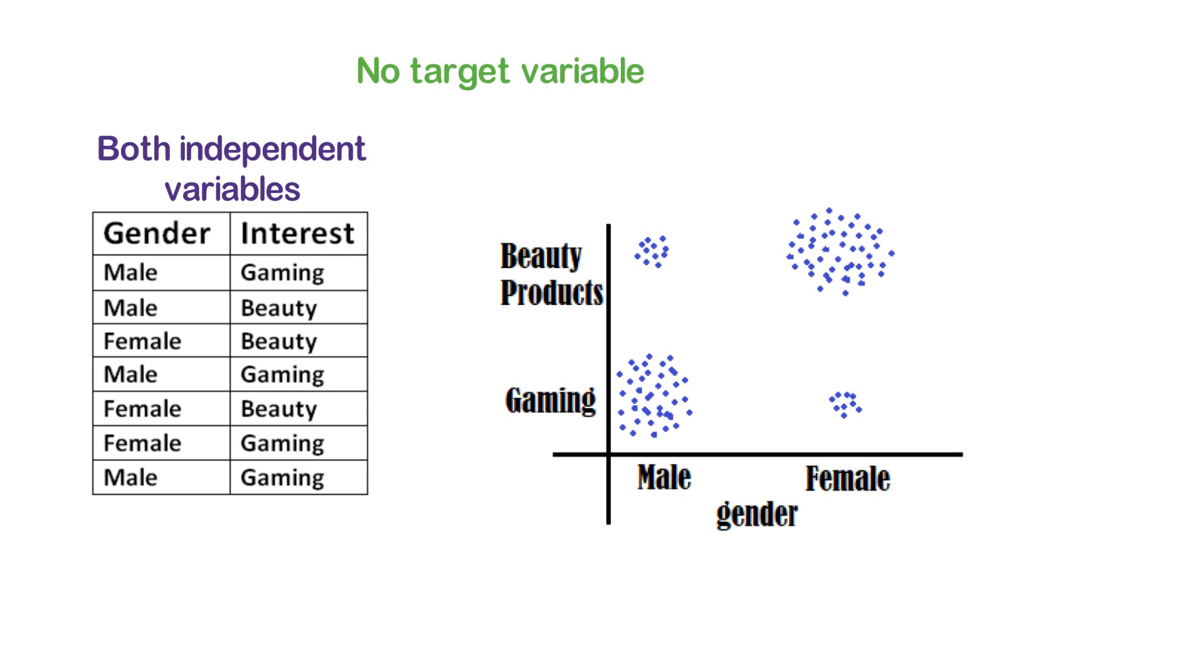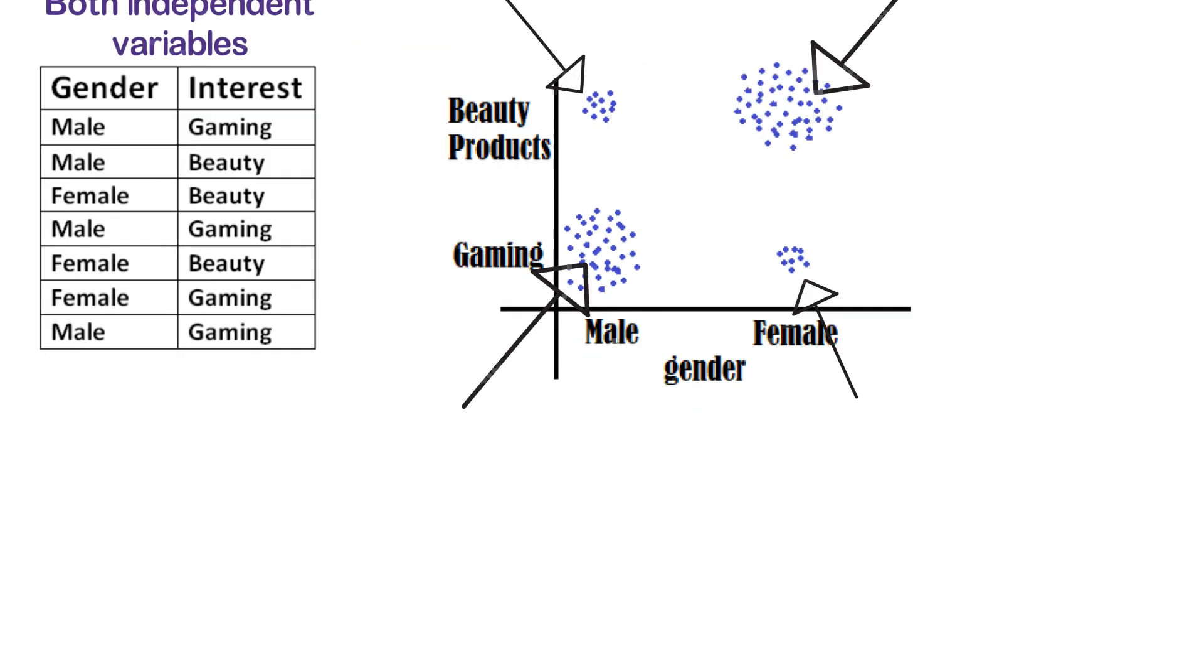We can observe some sort of pattern here. Many males are interested in gaming products. Many females are interested in beauty products. Very few females are interested in gaming products and very few males are interested in beauty products.